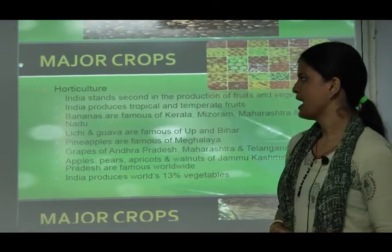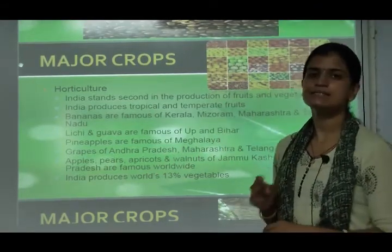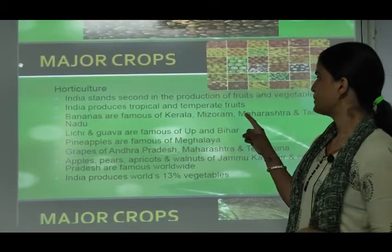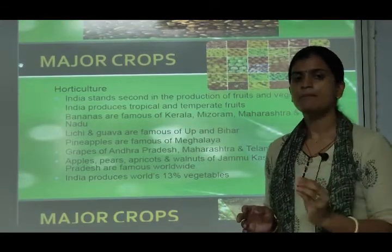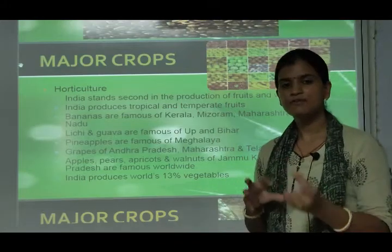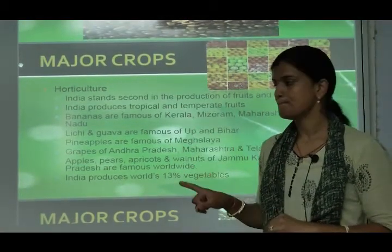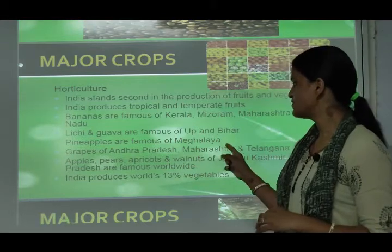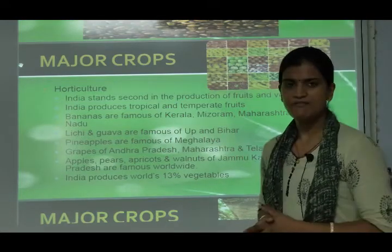India stands second in the production of fruits and vegetables — this is called horticulture. India produces both tropical and temperate fruits. Bananas are famous from Kerala, Mizoram, Maharashtra, and Tamil Nadu. Lychee and guava are famous from Uttar Pradesh and Bihar. Pineapples are famous from Meghalaya, grapes from Andhra Pradesh, Maharashtra, and Telangana, and apples, pears, apricots, and walnuts are famous from Jammu & Kashmir and Himachal Pradesh.